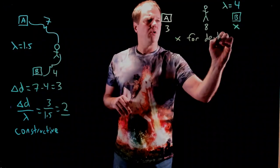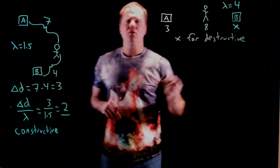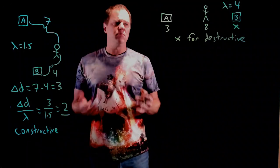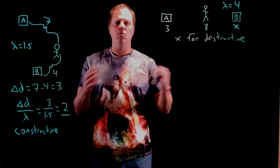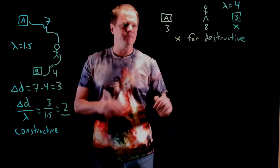As usual, the first step is to determine the path difference, symbolically. We can't get a number in this case, but we get it symbolically in terms of x, and then we'll worry about the destructive interference later.